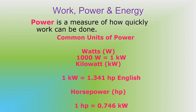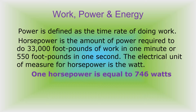Power is a measure of how quickly work can be done. In the metric system, power is measured in watts or kilowatts, where one kilowatt equals 1,000 watts. In the English system, power is often measured in horsepower, where one horsepower equals 0.746 kilowatts, and one kilowatt equals 1.341 horsepower. Horsepower is the amount of power required to do 33,000 foot-pounds of work in one minute, or 550 foot-pounds of work in one second. The electrical unit of measure for power is the watt; one horsepower equals 746 watts.